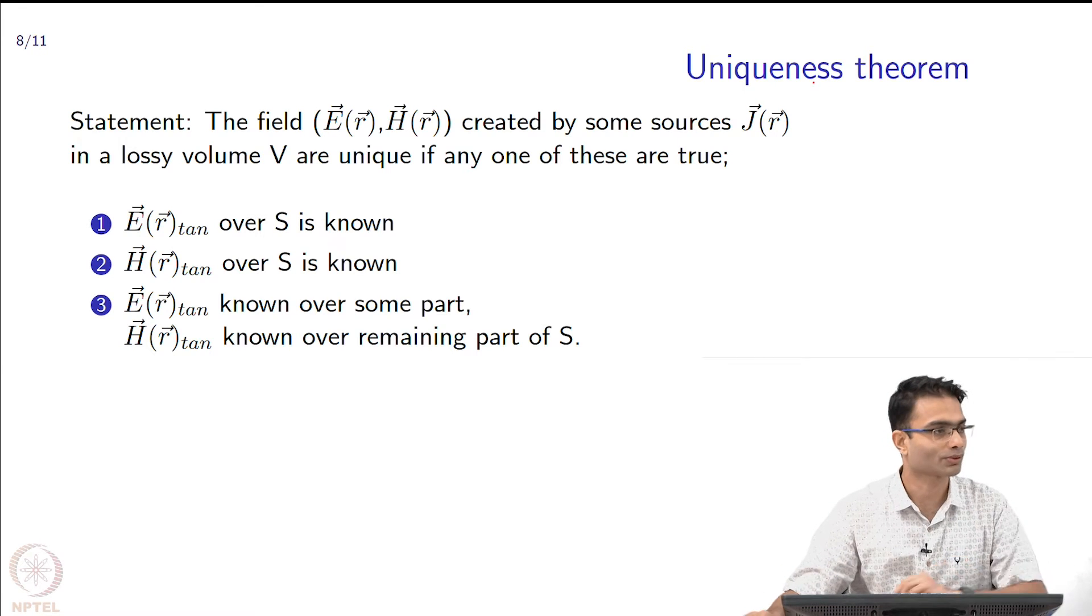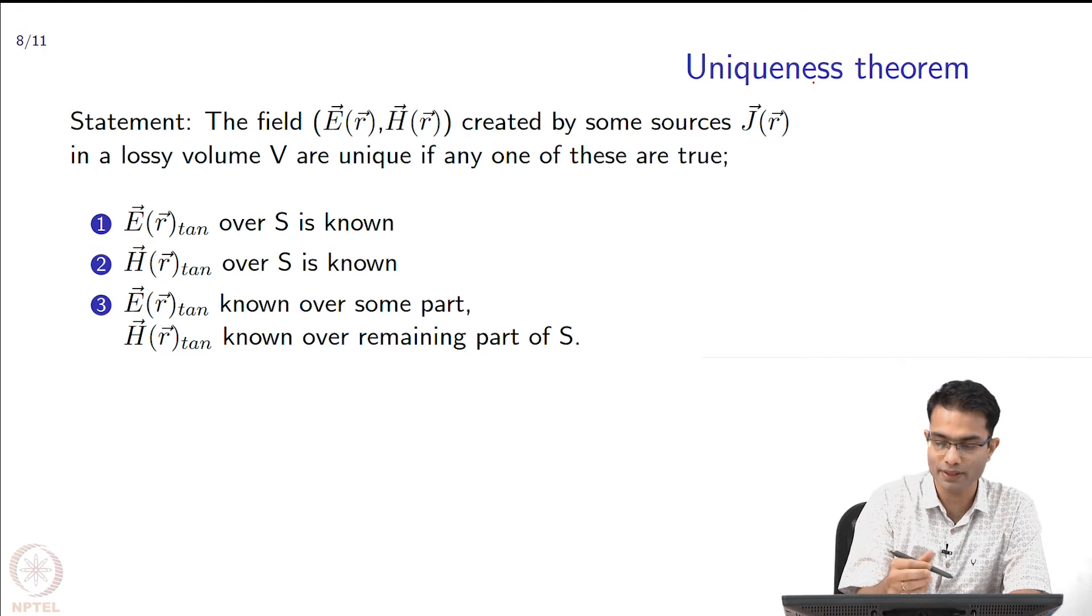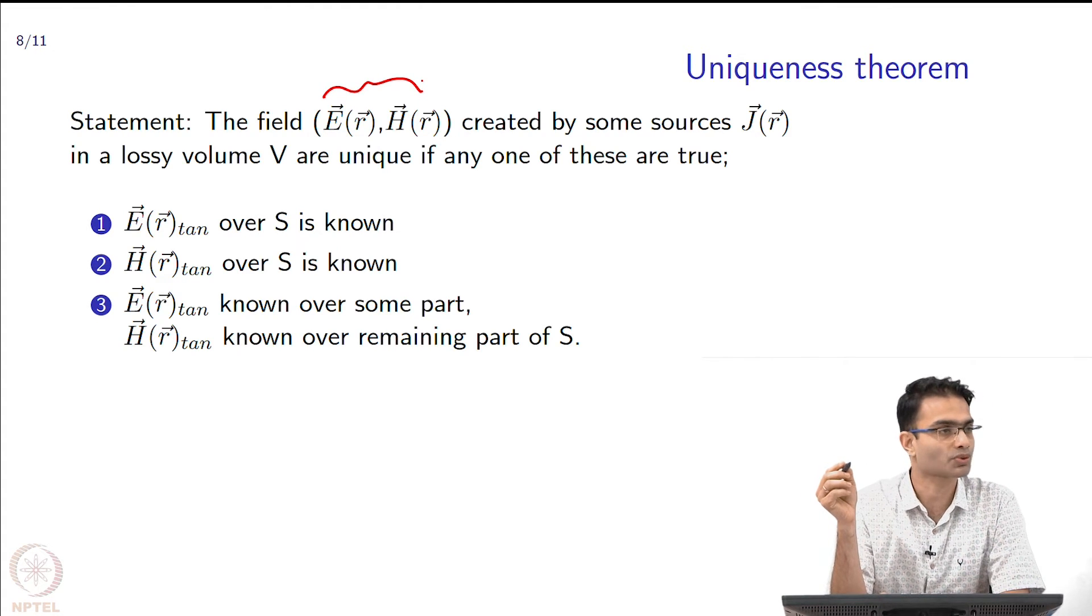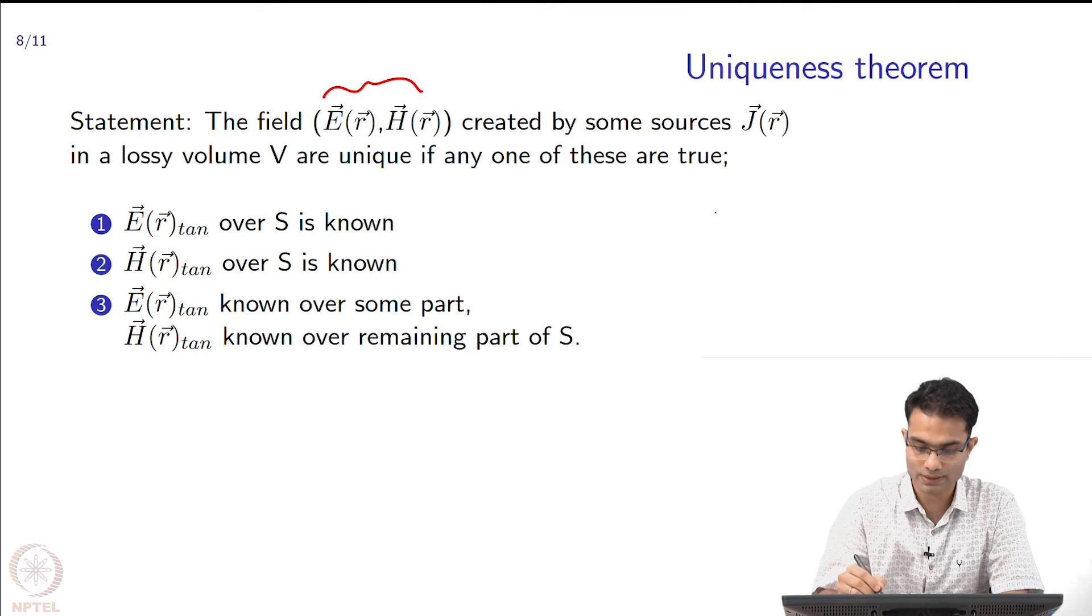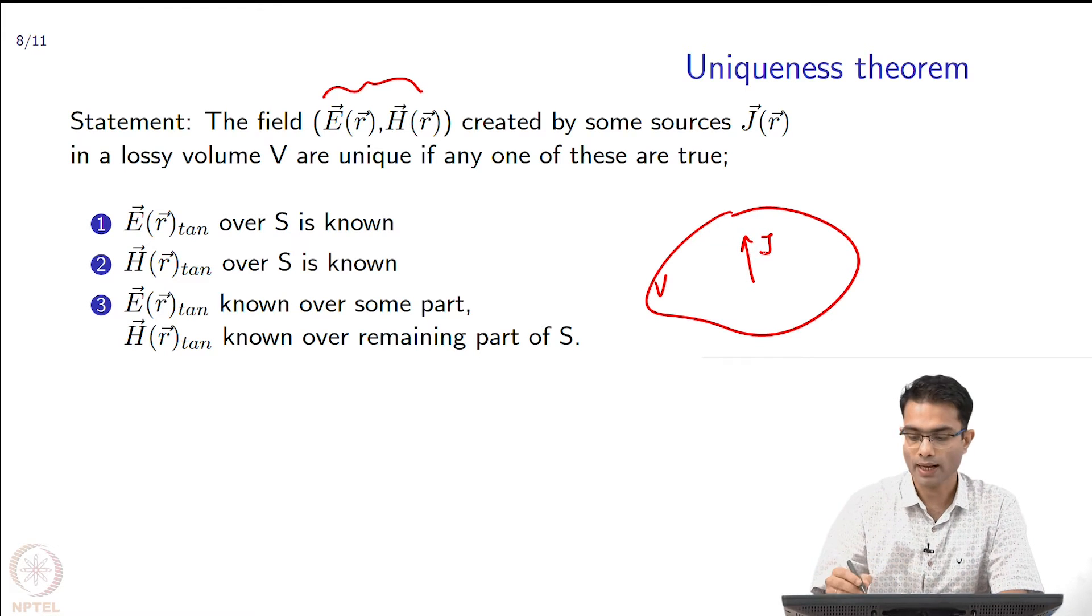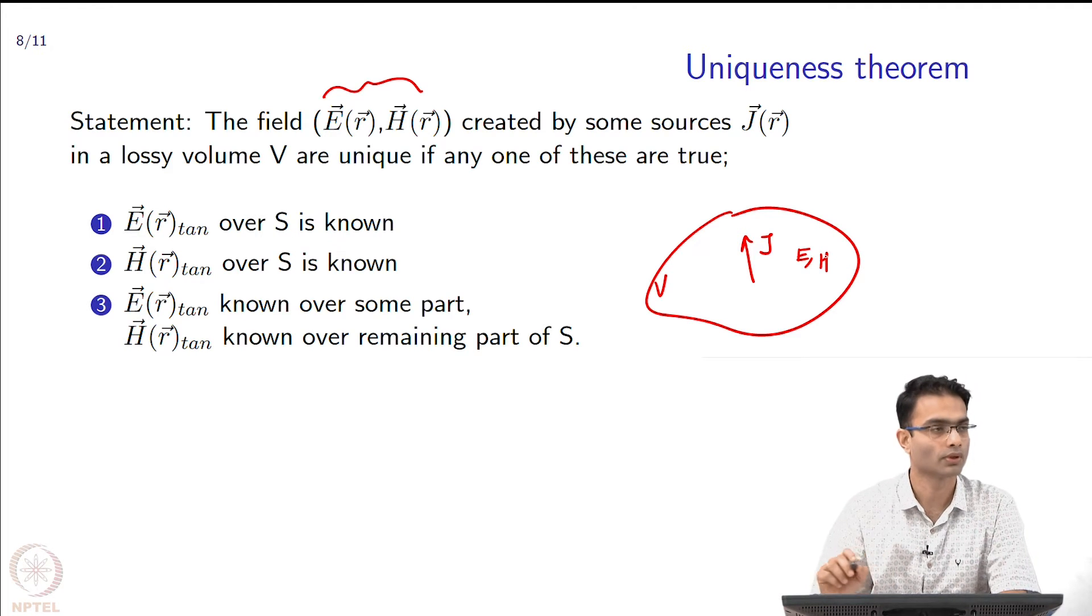The statement of the theorem is as follows. It says that the field, and by field I am talking about E and H, created by some sources J. Let us take some volume over here and let us put some current source over here J and this is going to produce a field E comma H.